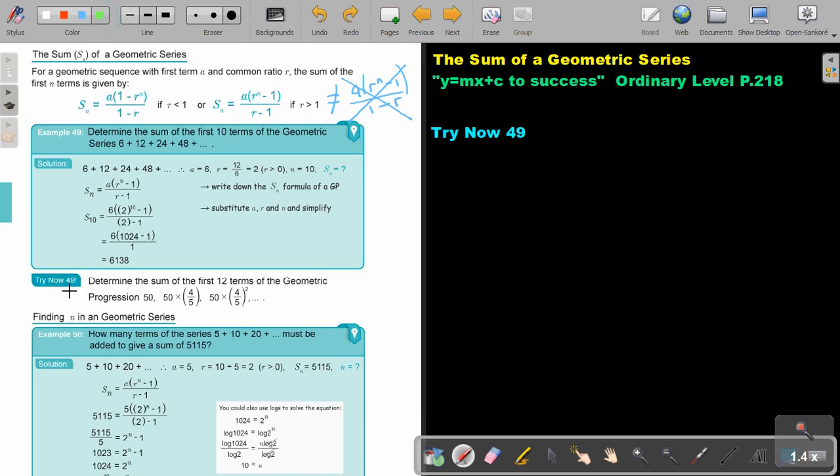So stop the video and do try now 49. You can continue the video as soon as you are finished. Let's start. So this is going to be 50 multiply 4 over 5, 50 multiply 4 over 5 squared. So the value of a is 50.